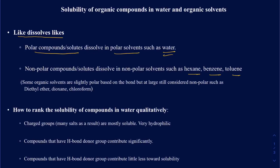There are some solvents that have slightly polar bonds on them, but even having polar bonds, overall they are considered to be non-polar — such as diethyl ether, dioxane, and chloroform. Those are the most common ones you're going to be seeing as we move along in organic chemistry.